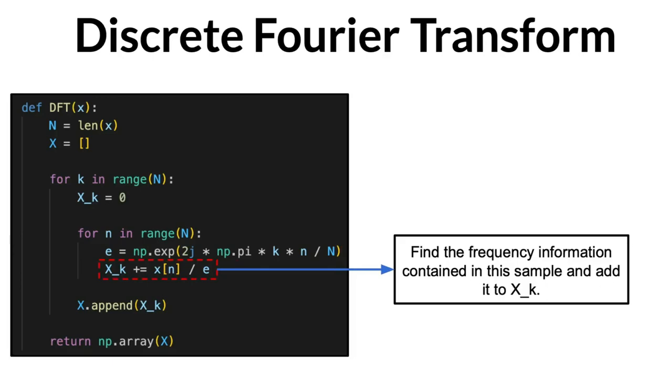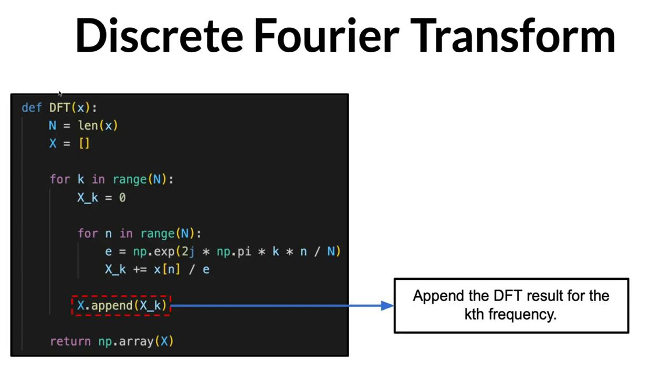Thus, after this loop is finished and summed everything up, we have managed to successfully extract the amplitude and phase information for the frequency k. So we append it to our final output.